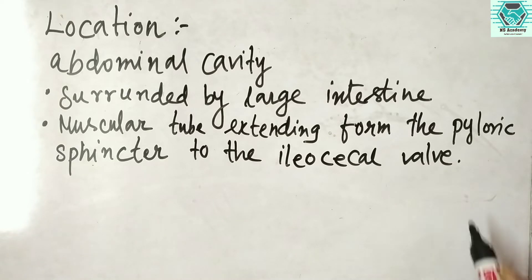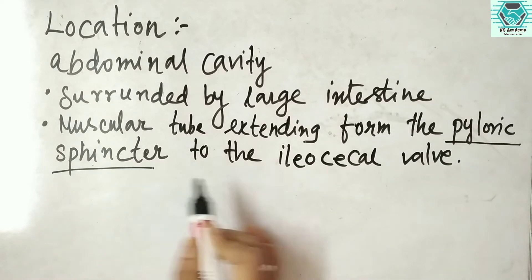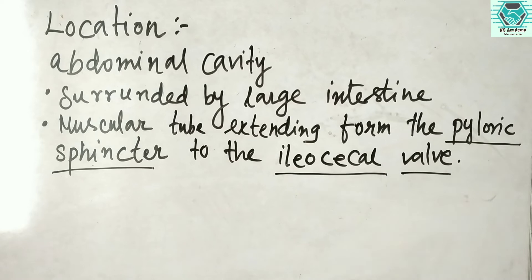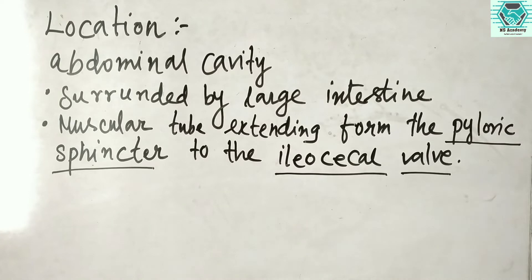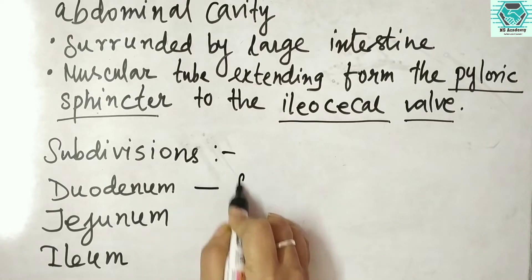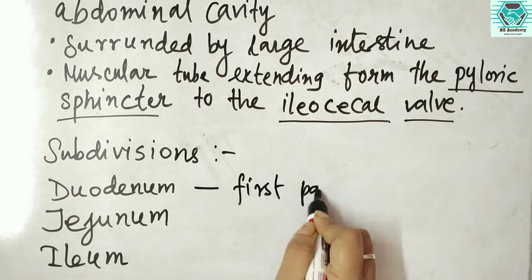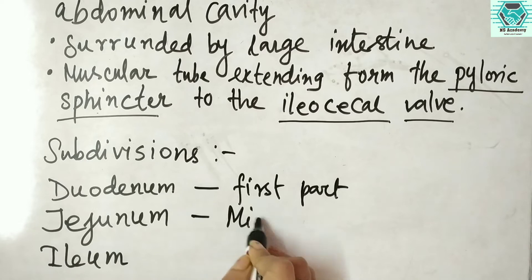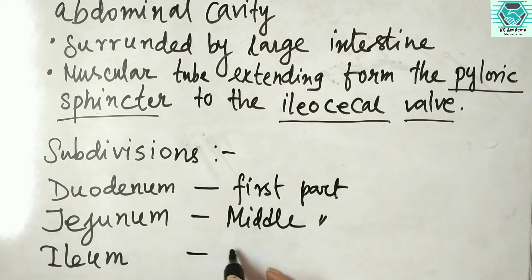The small intestine is divided into three parts. The first part is called the duodenum, the second part is called the jejunum, and the last part is called the ileum. The duodenum is the first part, jejunum is the middle part, and ileum is the last part of the small intestine.